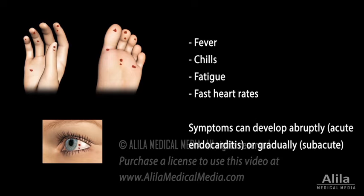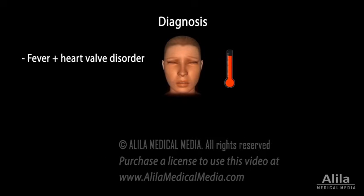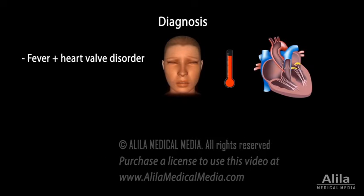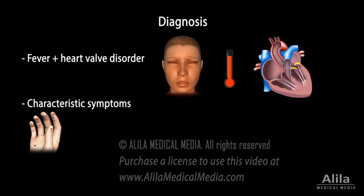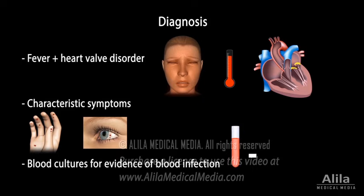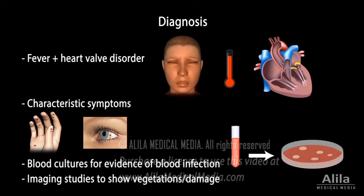Symptoms can develop abruptly or gradually, depending on the type of endocarditis. Endocarditis must be suspected when fever is combined with a heart valve disorder, especially when characteristic symptoms, such as reddish spots on fingers or the whites of the eyes, are present. But diagnosis usually requires evidence of blood infection and imaging studies such as echocardiography to show vegetations on heart valves or damage to the heart tissues.